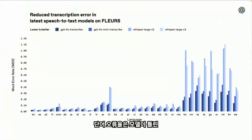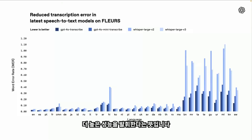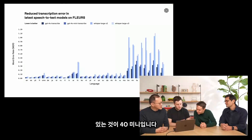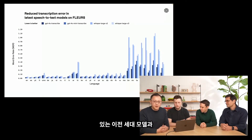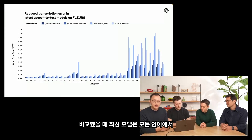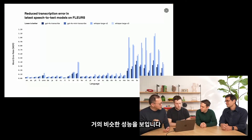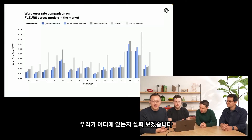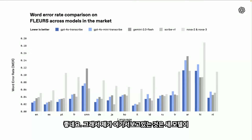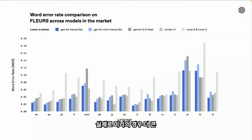We measure the accuracy of our transcription by word error rate — the percentage of words that the model gets wrong. So the lower the error rate, the higher the model actually performs. The dark blue is the newest 4O model and the one beside it is 4O Mini. As you can see, compared to our previous generation models Whisper 2 and Whisper 3, our newest model outperforms across almost every single language we tested. Compared to other options on the market, the new model is state of the art across many languages — English, Spanish, and more. And 4O Mini is state of the art as well, if not for its bigger brother model.